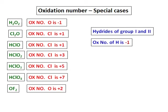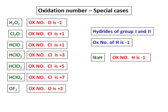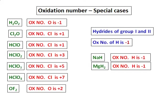The other discrepancies are the hydrides of groups 1 and 2. The oxidation number of hydrogen, which is usually positive 1, is negative 1 when it combines with metals of group 1 and group 2. For example, sodium hydride has an oxidation number for hydrogen of negative 1, and magnesium hydride also has an oxidation number for hydrogen of negative 1.